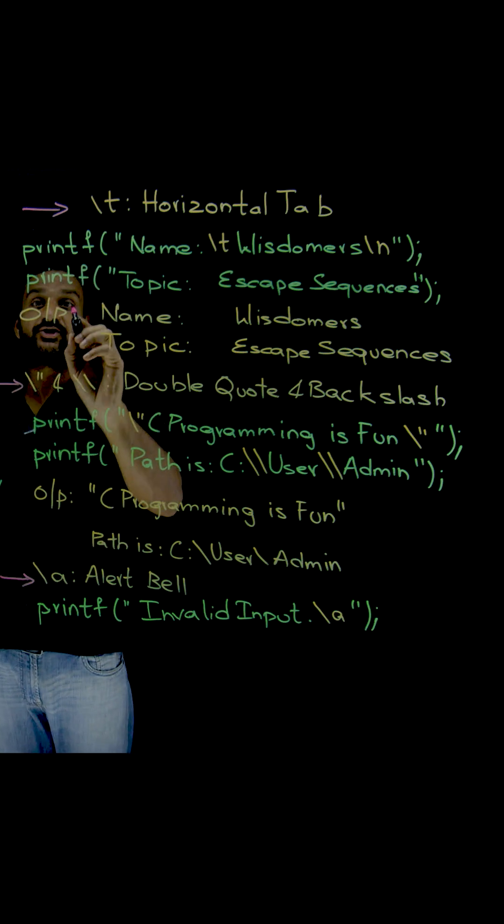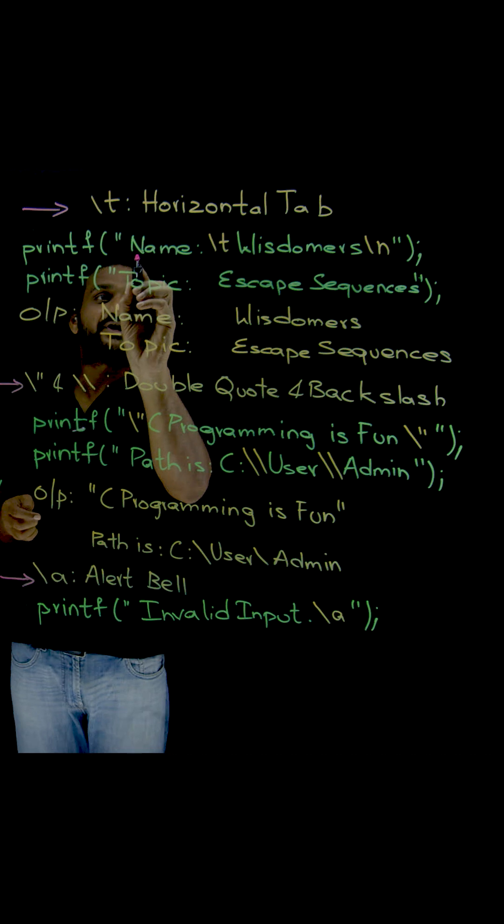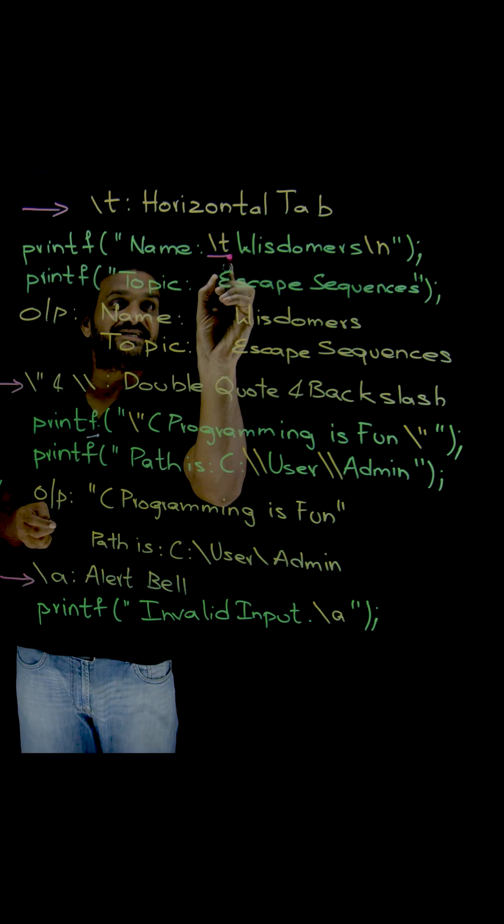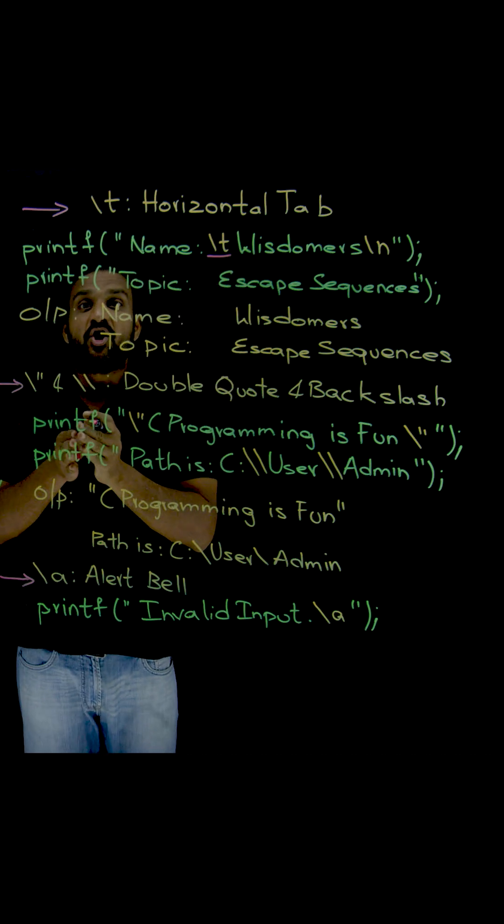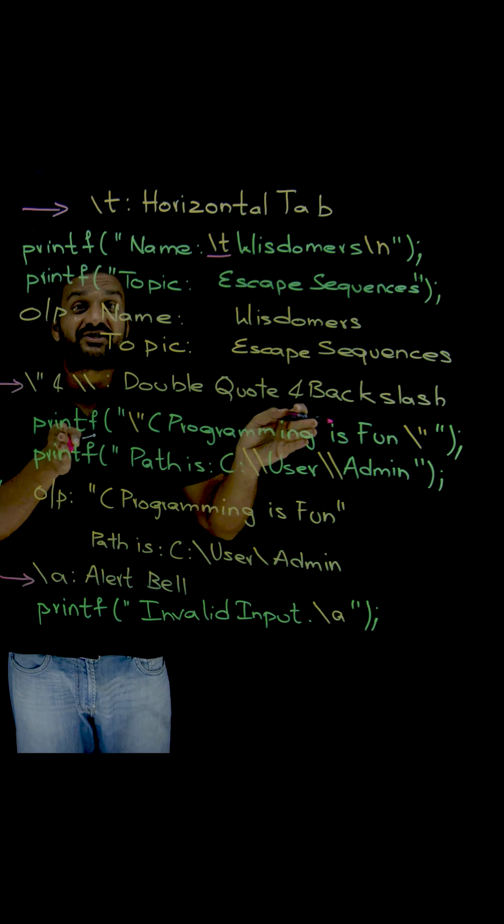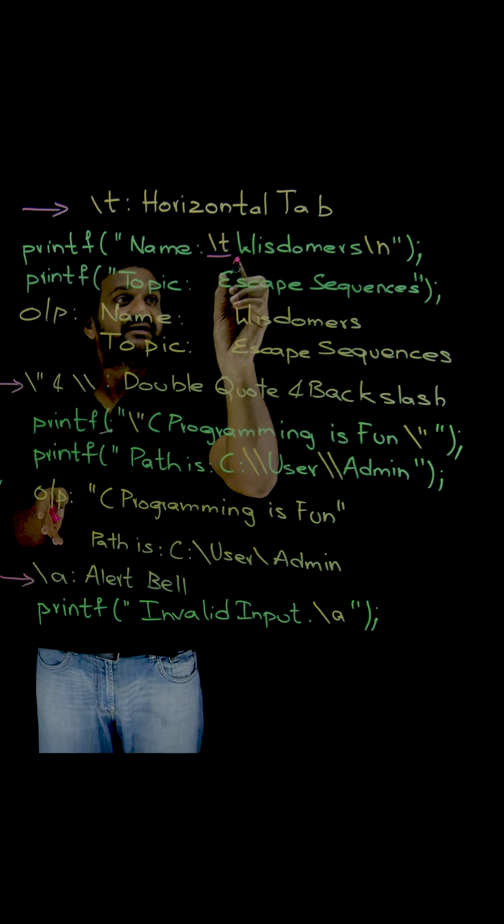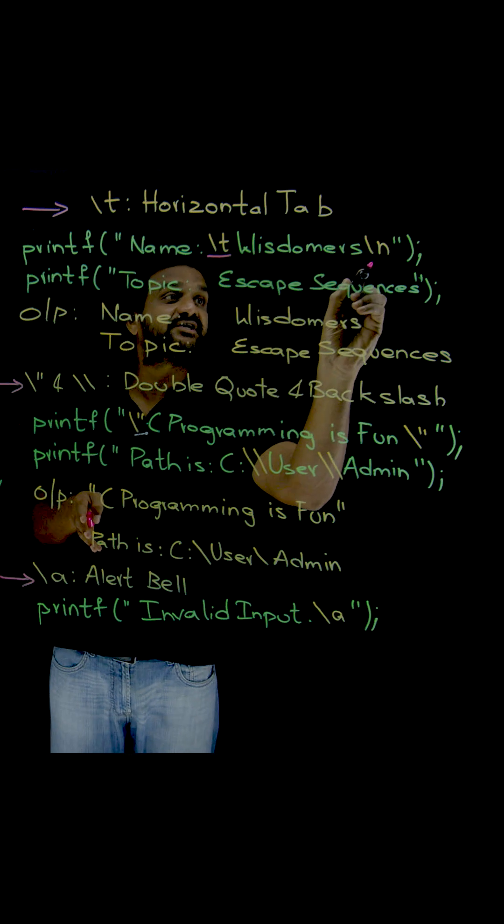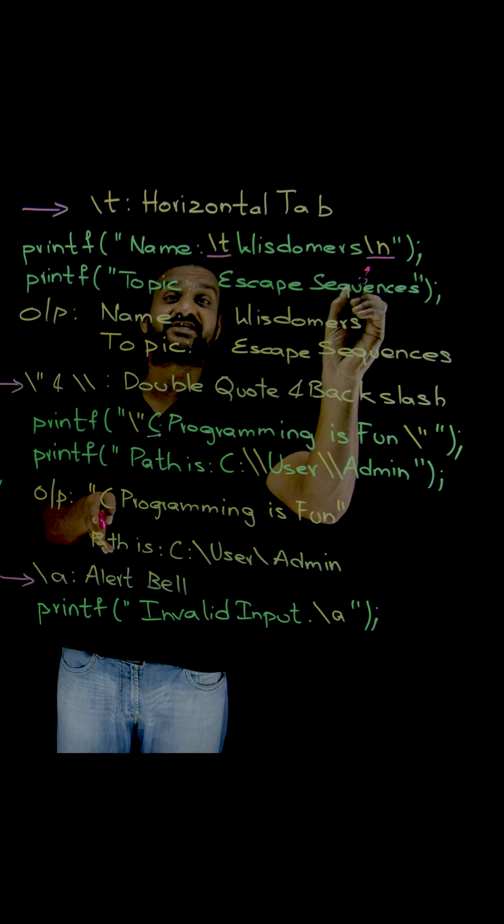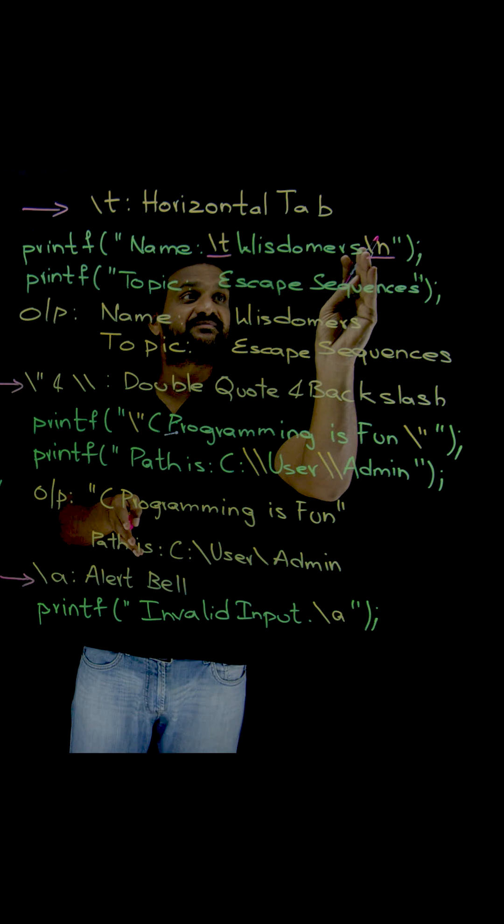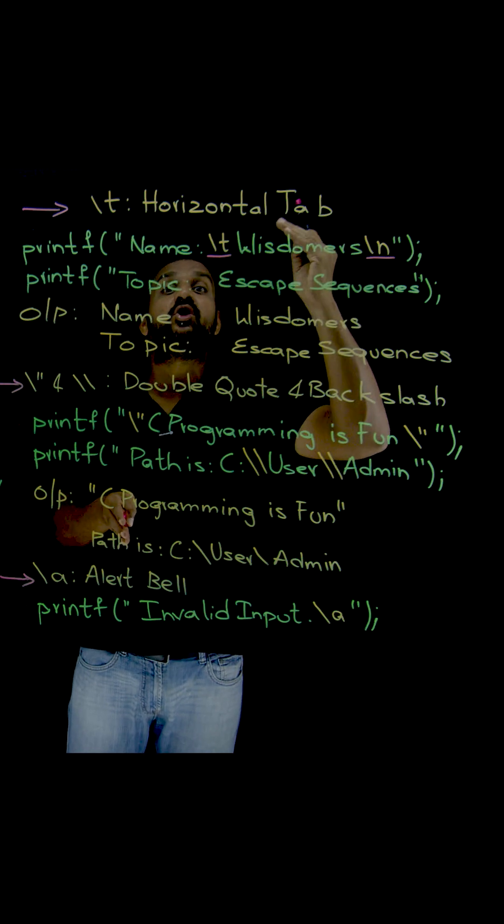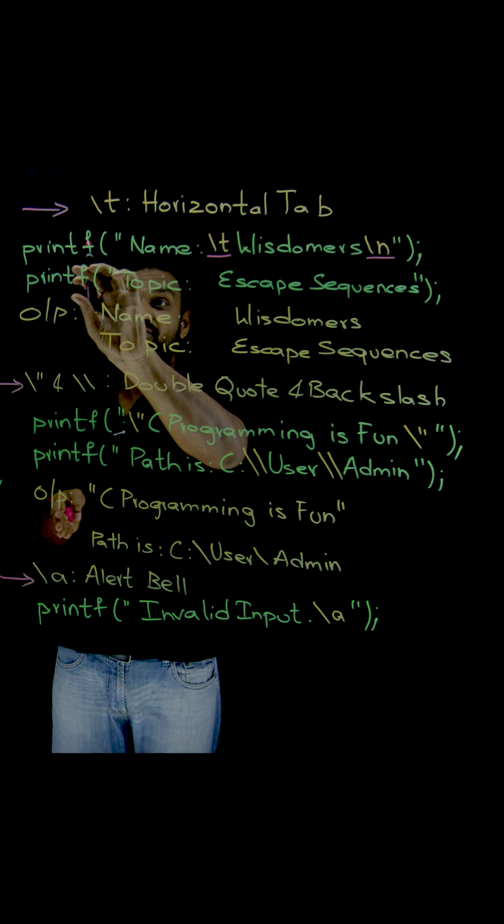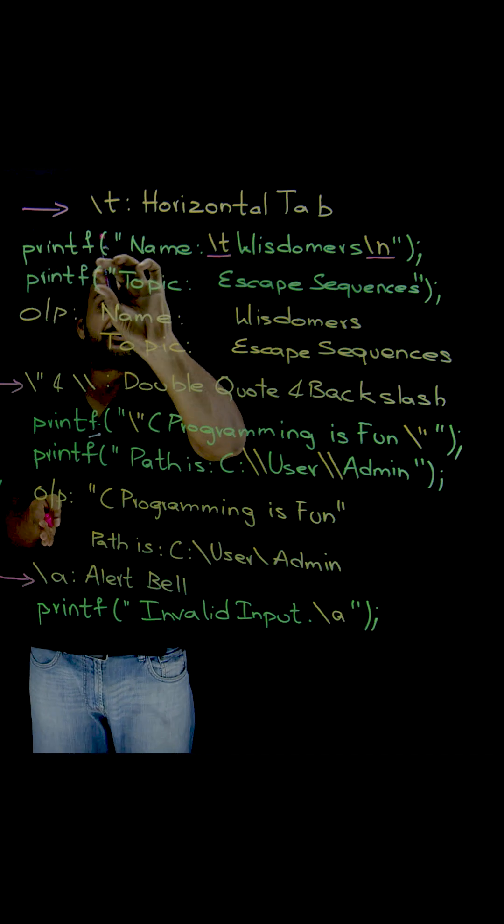I have taken two examples here. We are having name, and after that we use this slash t, which means horizontal tab, horizontal space. After that, I want to print wisdomers. After that, I used another escape sequence which is slash n. After printing wisdomers, I want the cursor to move on to the next line. If you don't give this, the context of this printf will get printed from here.